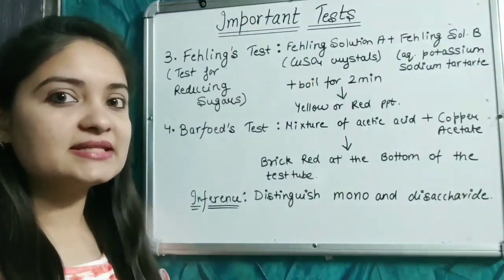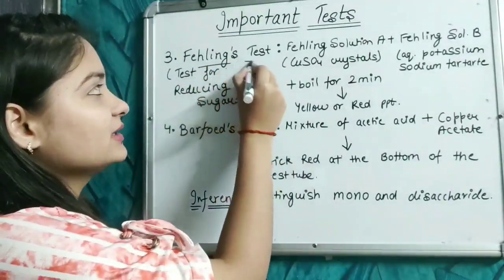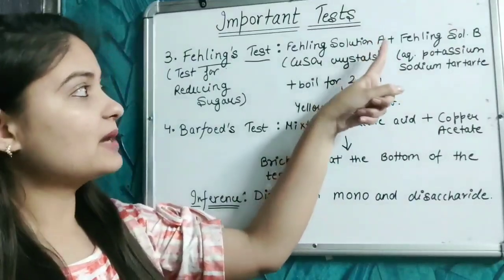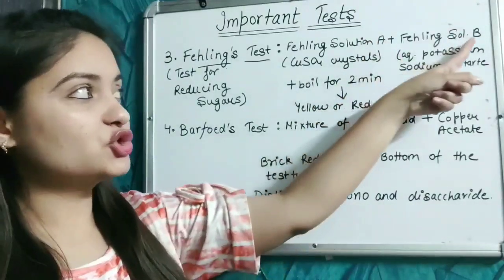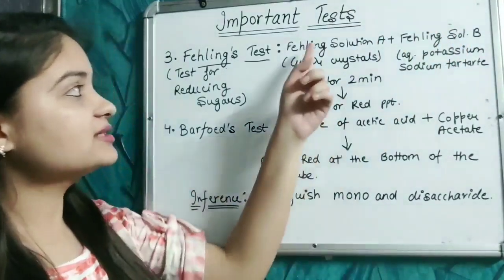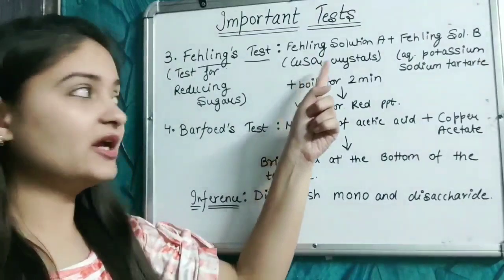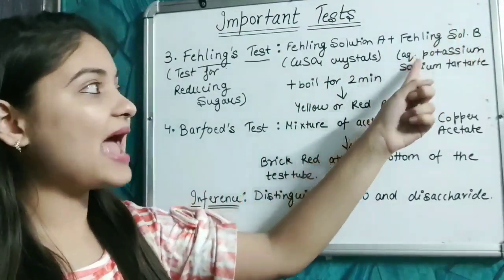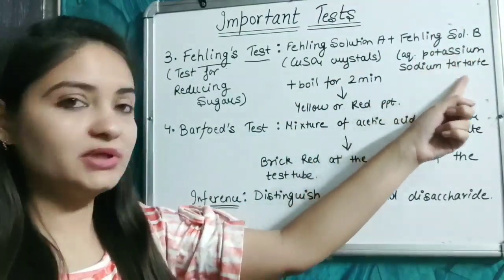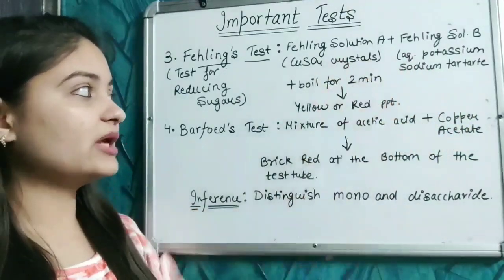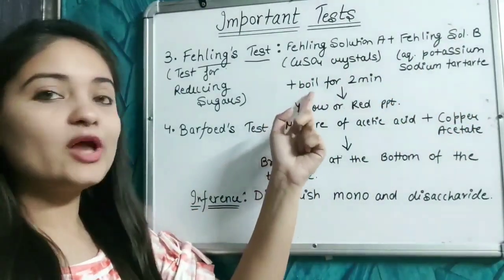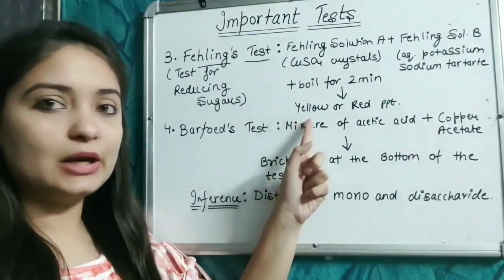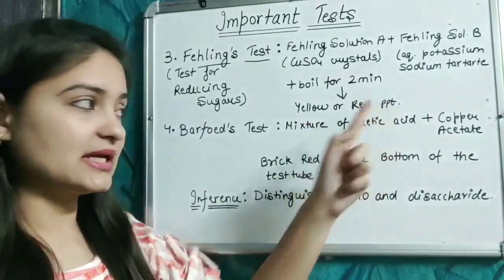The next test is Fehling's test, using Fehling's solution A plus Fehling's solution B. Fehling's solution A is copper sulfate crystals and Fehling's solution B is aqueous potassium sodium tartrate. When these two reagents are combined and boiled for about two minutes, a yellow or red precipitate is obtained.